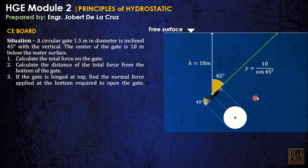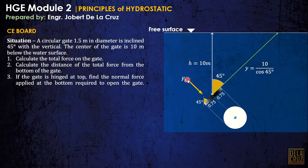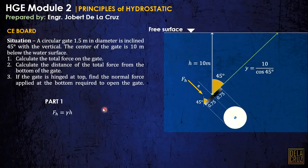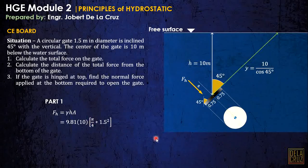The diameter is 1.5 m so the radius is 0.75 m. For part one, the total hydrostatic force is F = γh̄A = 9.81 × 10 × (π/4)(1.5²), giving 173.36 kilonewtons.